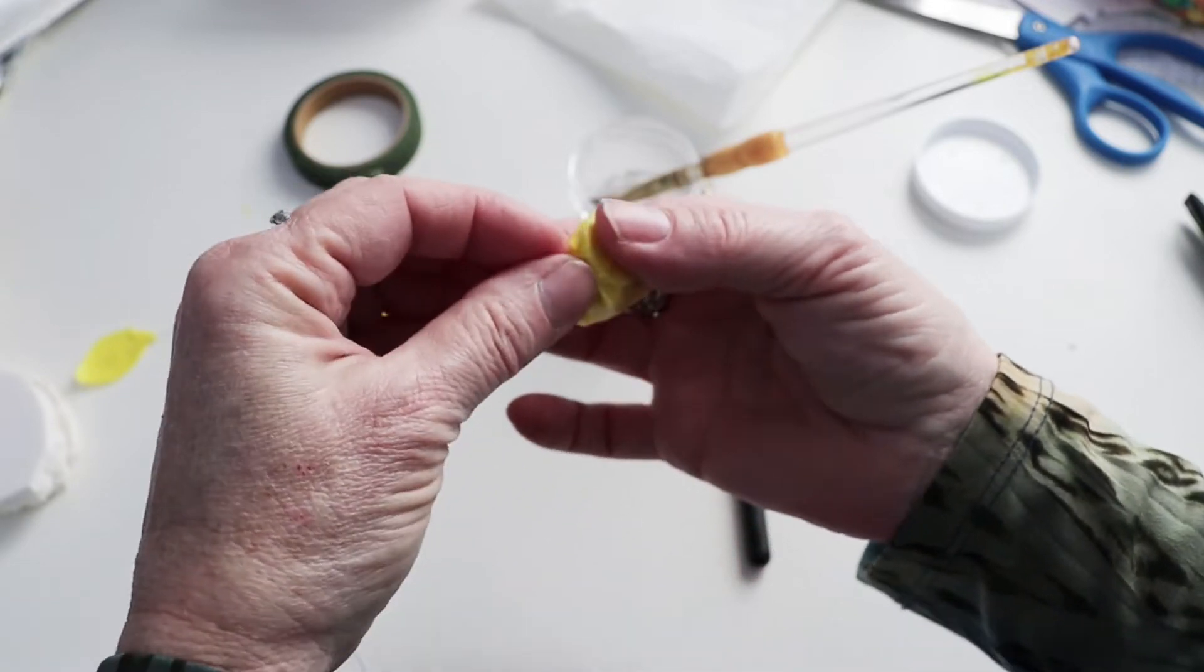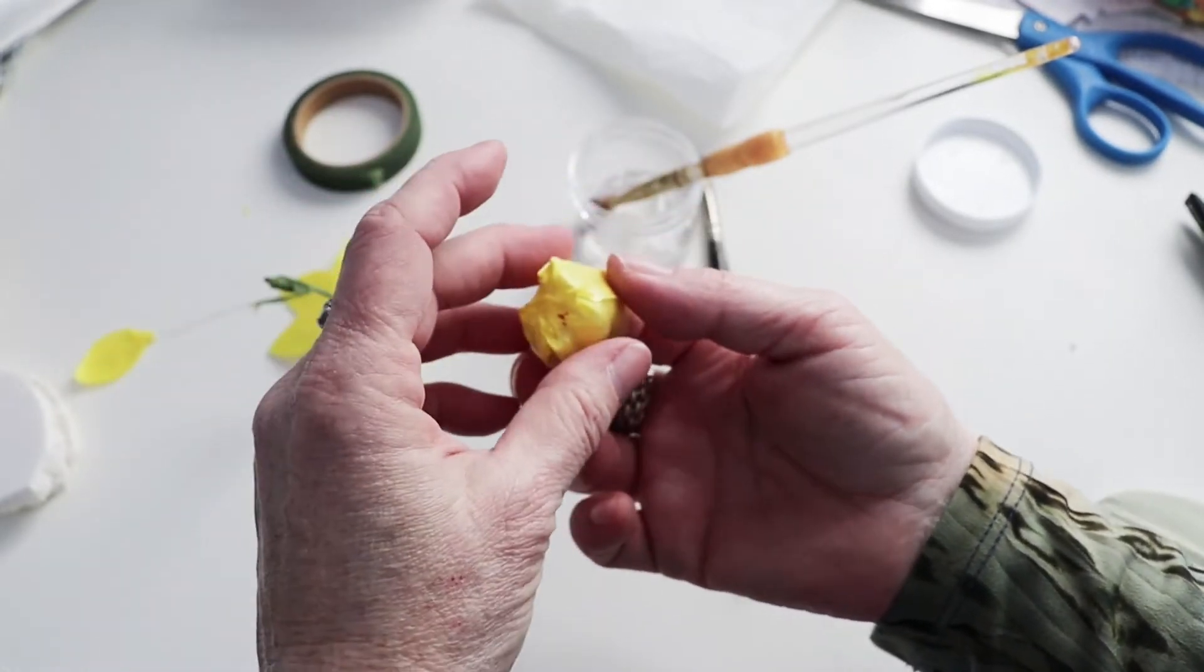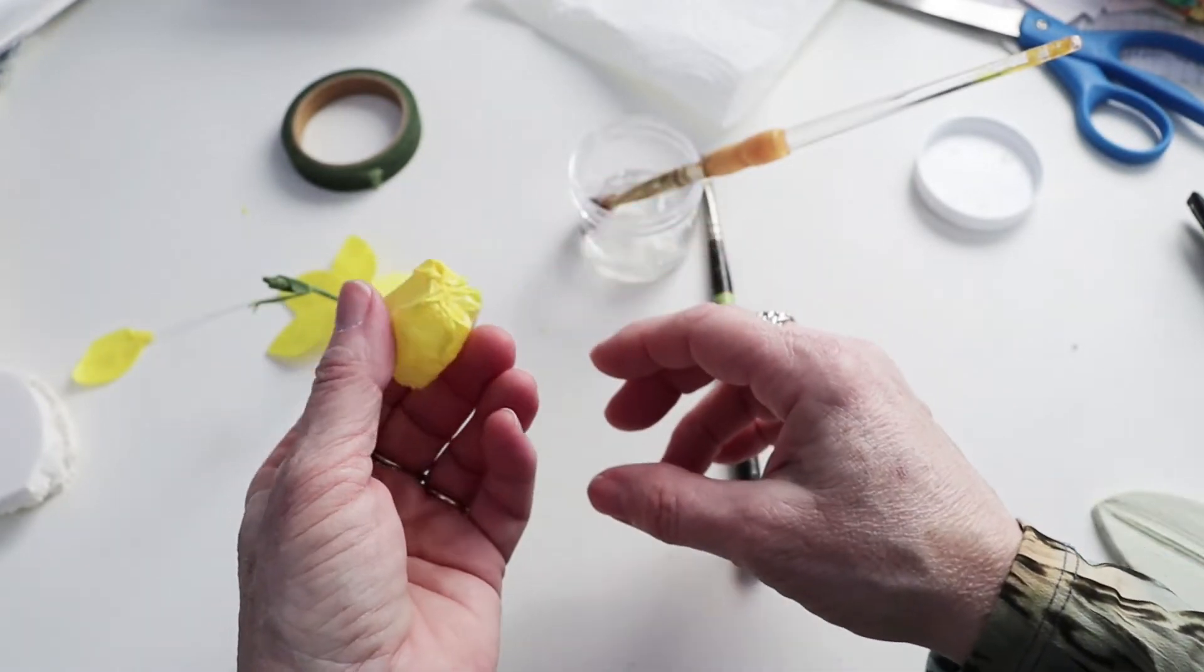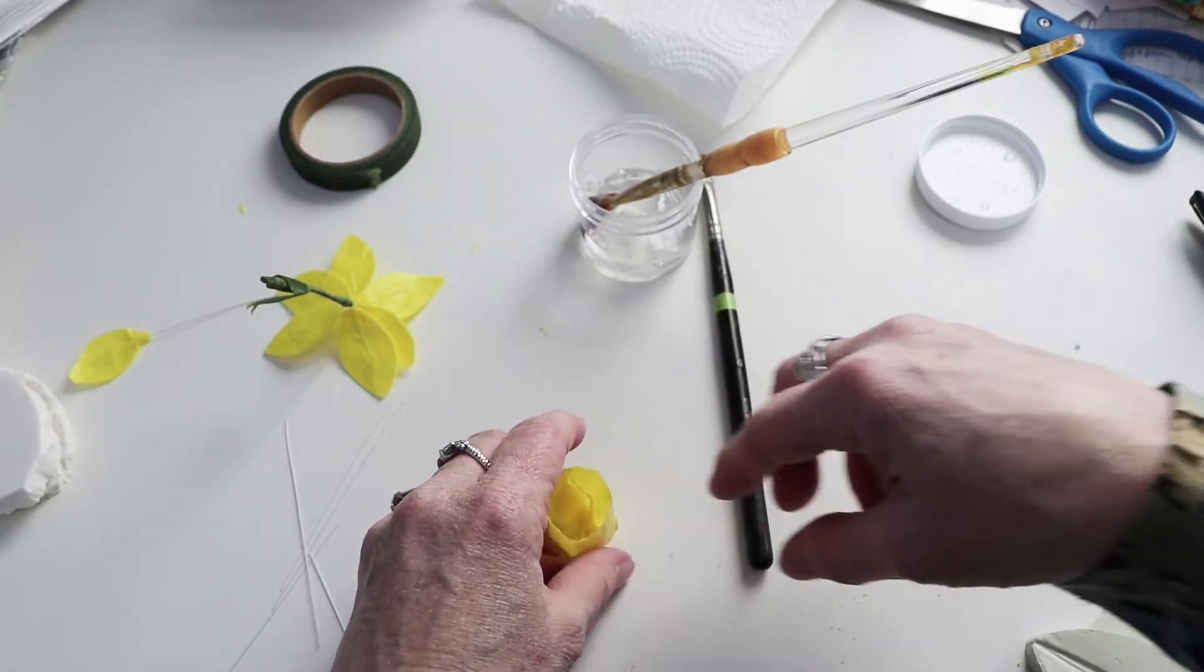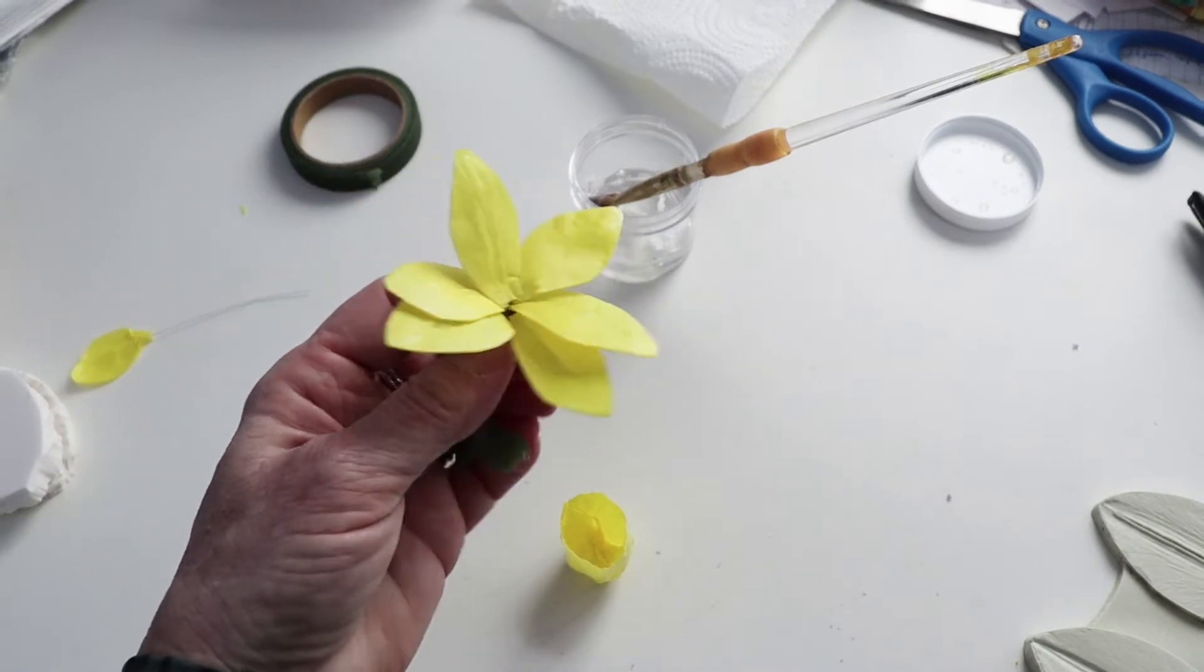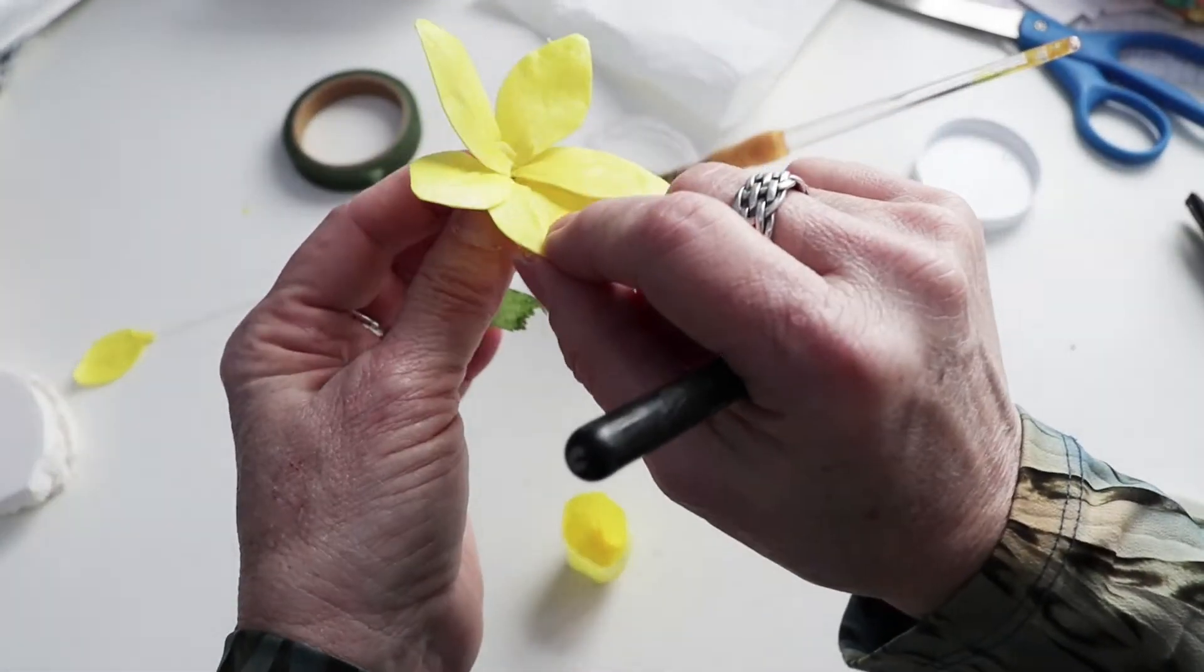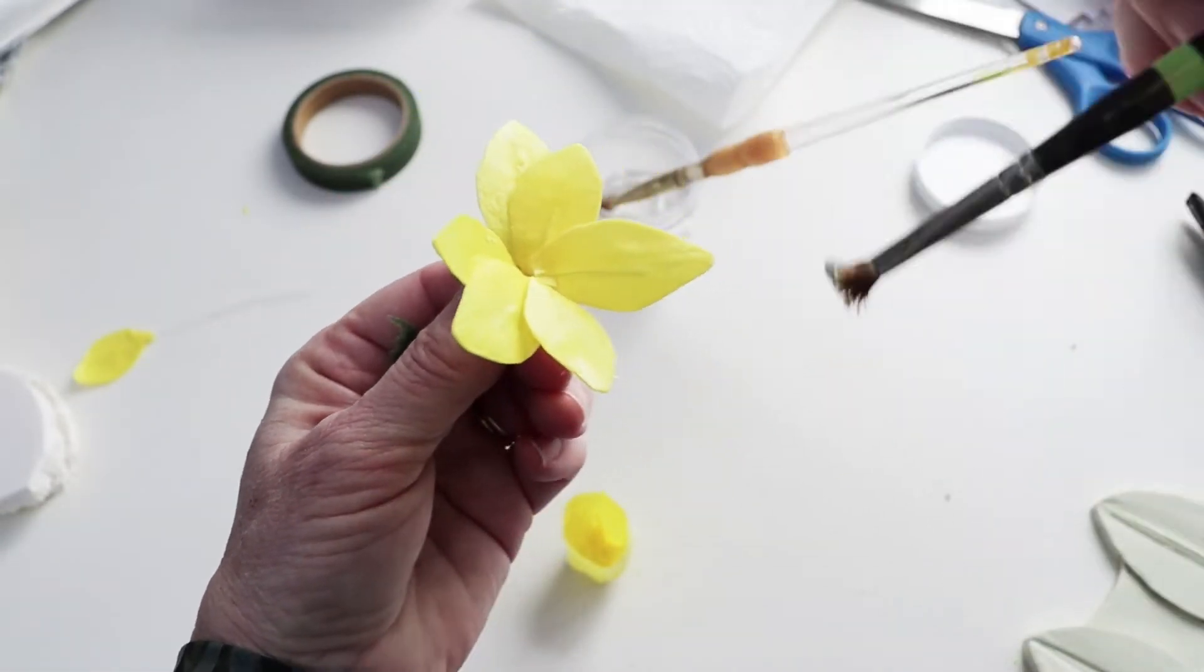And we're gonna do the center after we do this just because I thought that that was an easier way to do it. So now I've got this little cup, I'm gonna press it down here so that it's pretty flat on the bottom and we're going to attach it to the petals. So you want to spread these petals out so that they're relatively well spread apart because once you put that center on it, it's going to be hard to move them around.